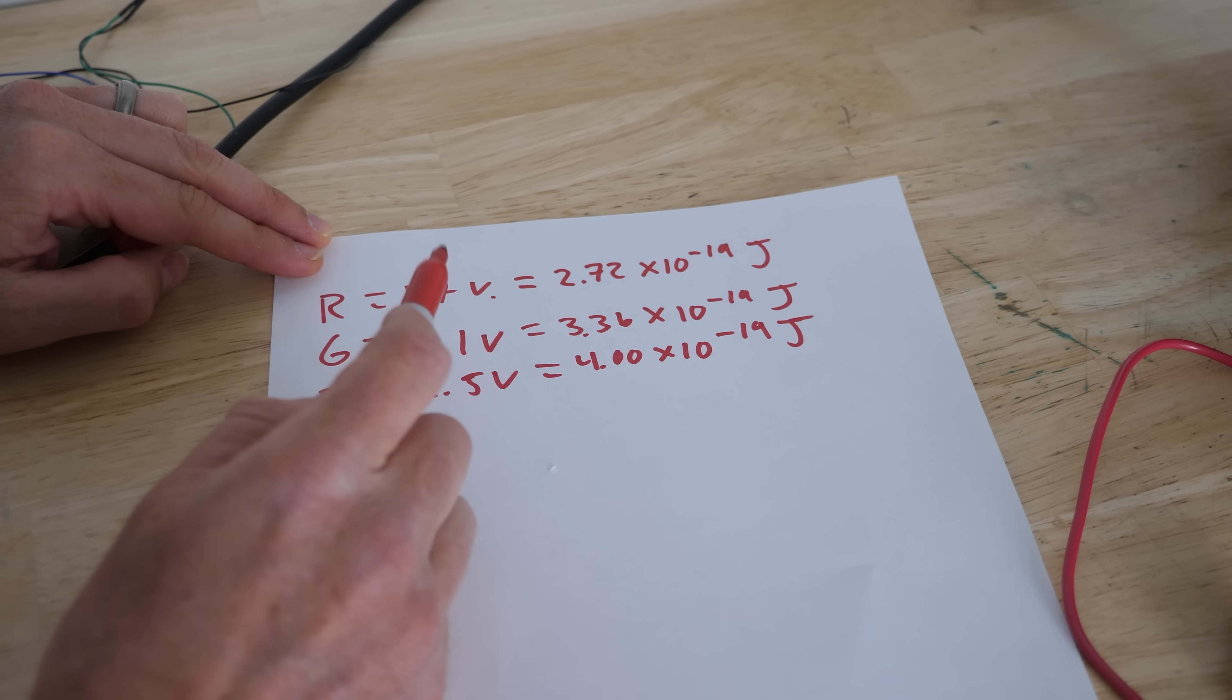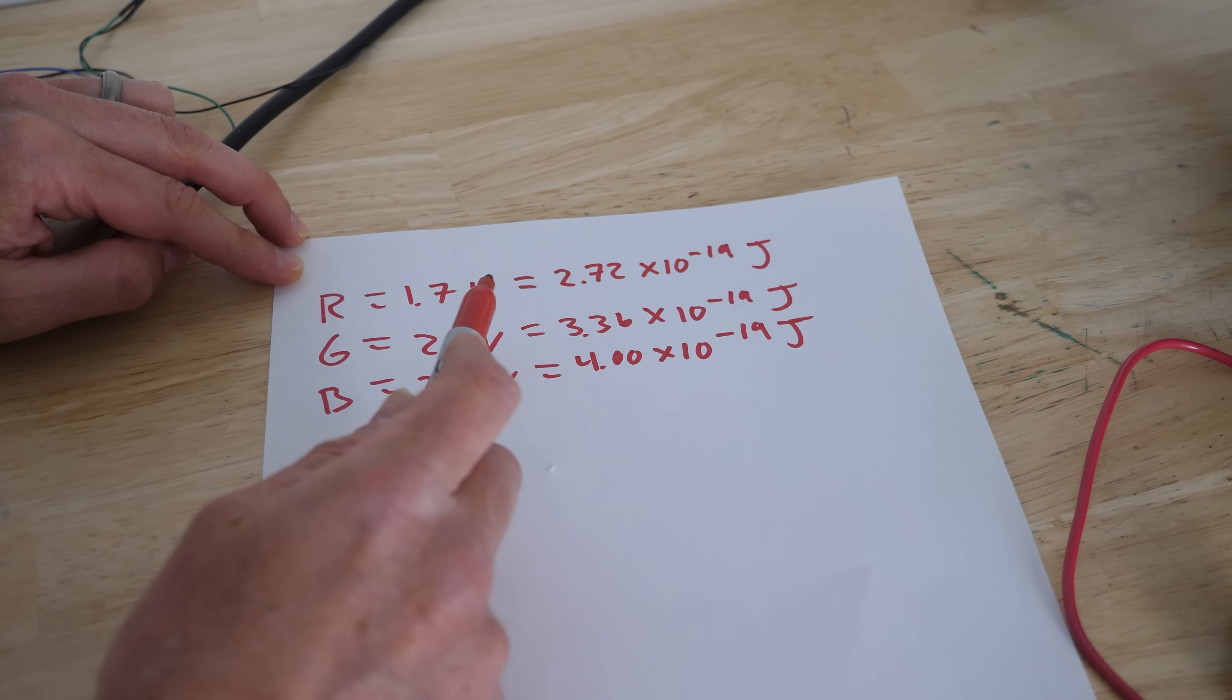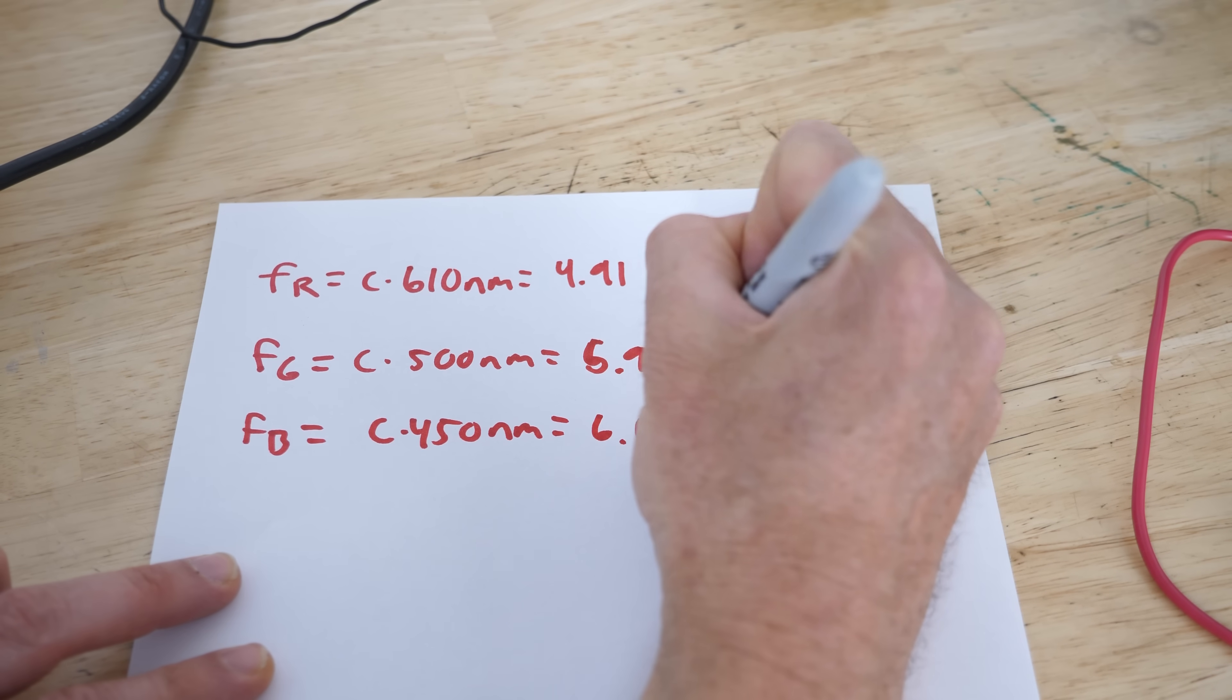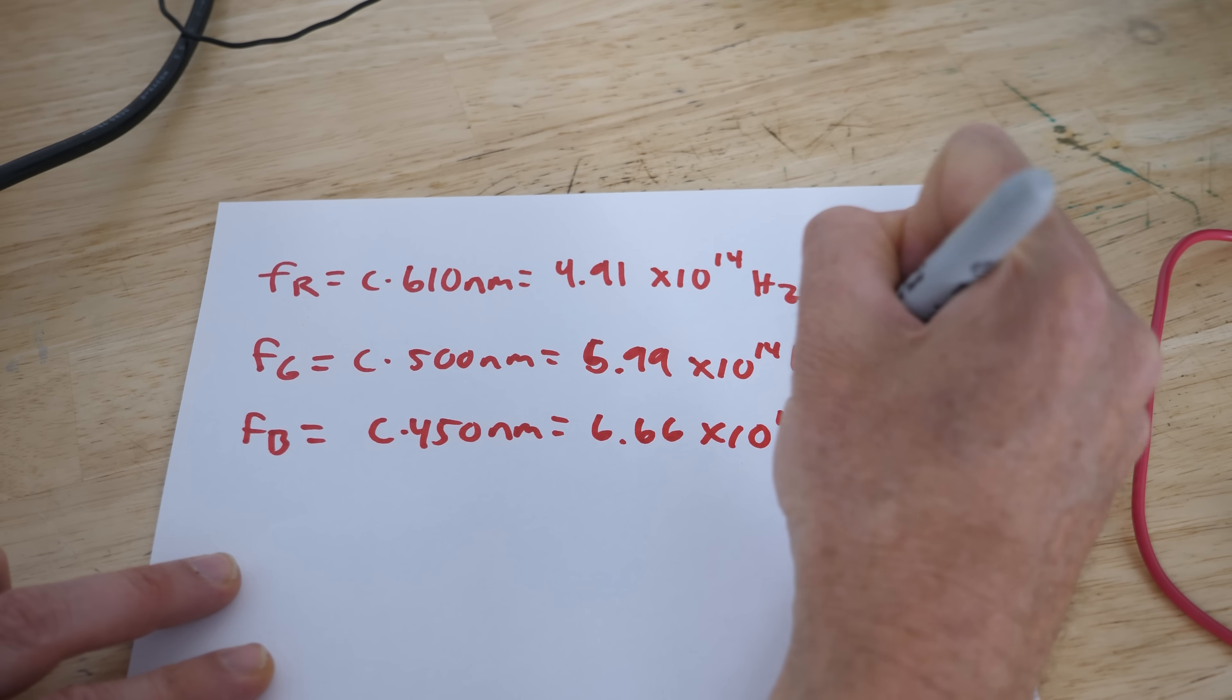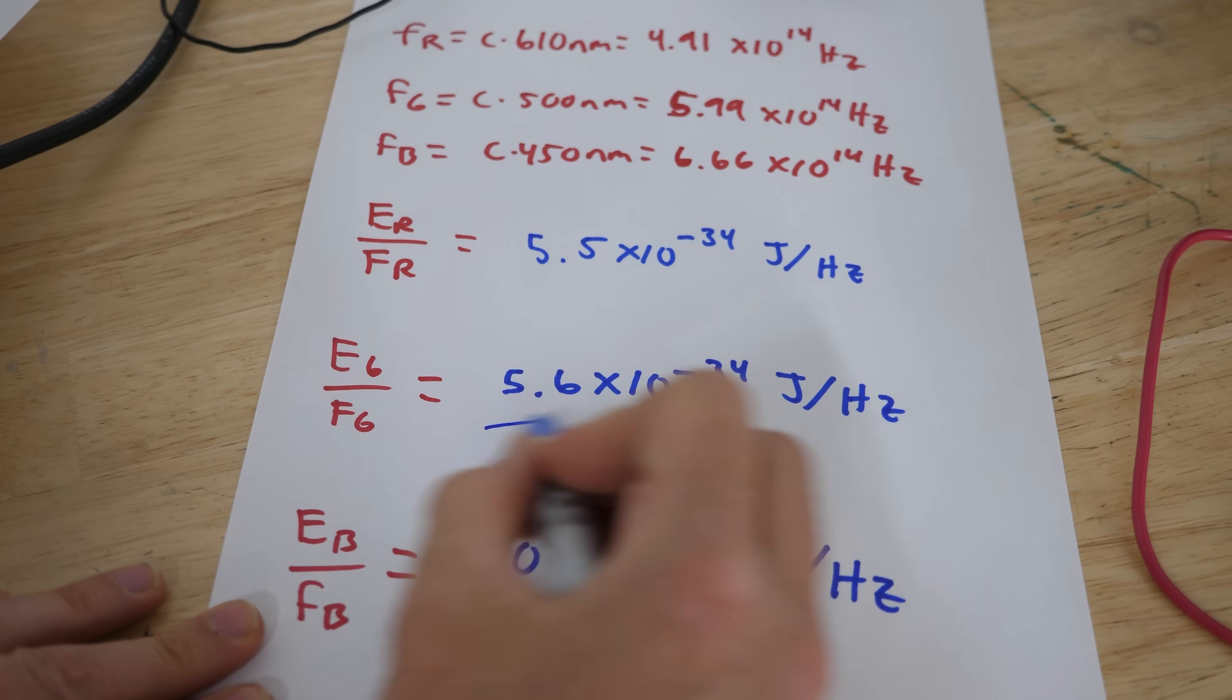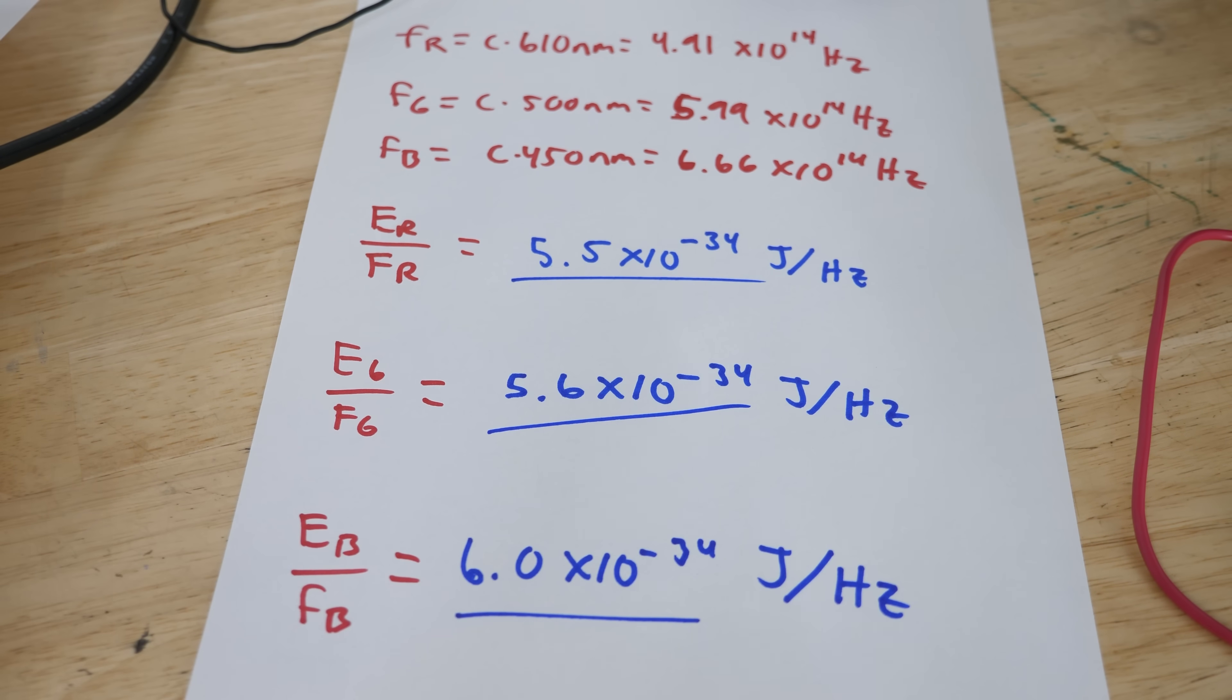So we're going to multiply this voltage by the charge of one electron. So 1.6 times 10 to the negative 19 coulombs times this voltage will give us the energy. Then we just convert the wavelengths into frequencies. Then we take the energy for each color divided by the frequency of each color and this is what we get for each color.